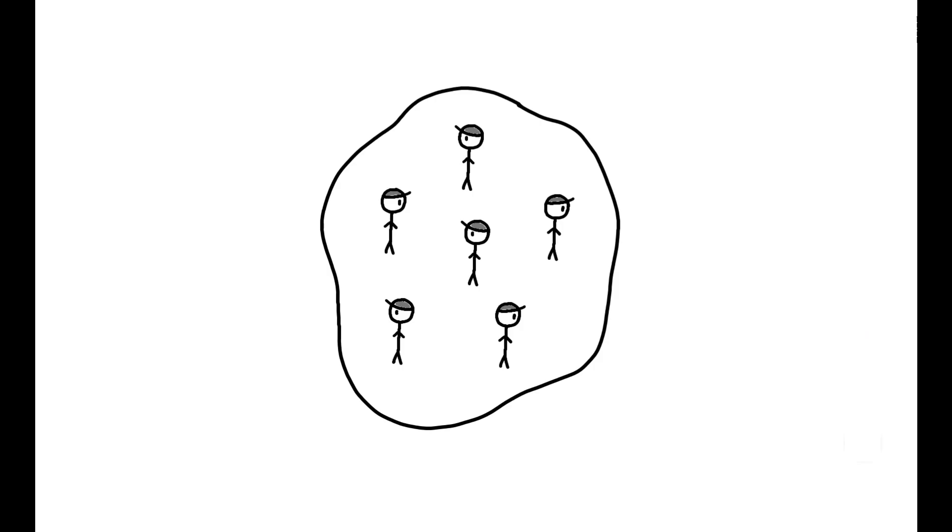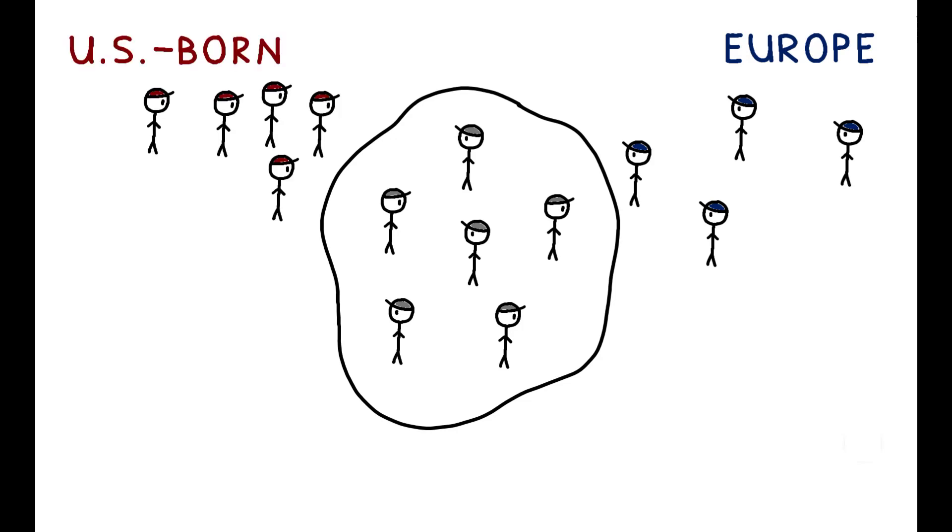In urban areas, the decline in immigrant entry from Europe was countered almost entirely by increased in-migration of U.S.-born workers and immigrants from unrestricted countries such as Canada and Mexico.